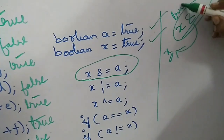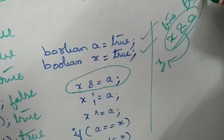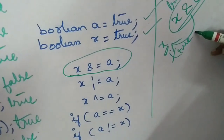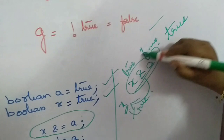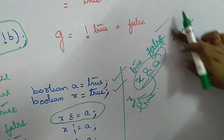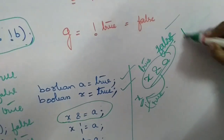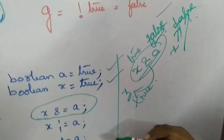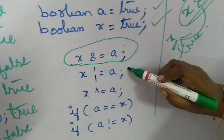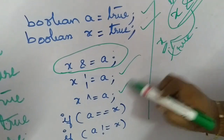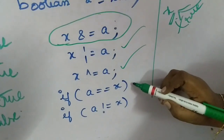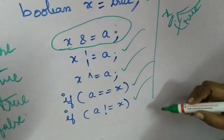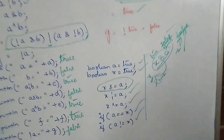X's value is true and A's value is true, so true AND true is true — X will hold true. If A were false, then true AND false would return false and X's value would change to false. You can also perform OR compound assignment, AND compound assignment, and exclusive OR compound assignment. You can also use equality between booleans in if statements, while statements, and so on. That covers the Boolean logical operators.